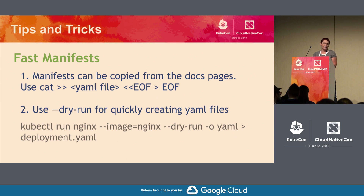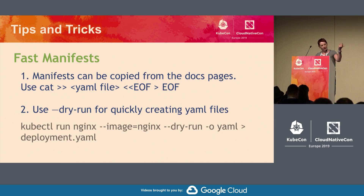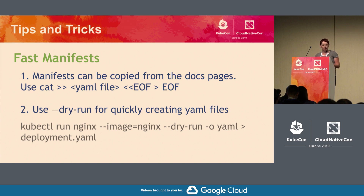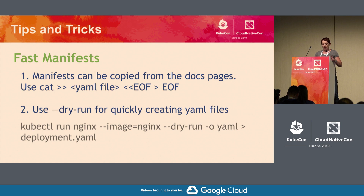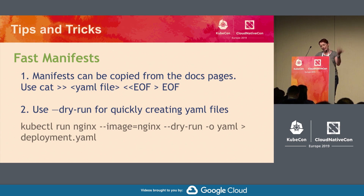Time is of the essence, so you need to create manifests quickly. What worked really well for me was grabbing manifests from the Kubernetes documentation pages, cat-ing them into a YAML file, saving it, and then editing from there. Know your way around the tasks and concepts sections so you can quickly get the YAML example you need. The other approach is using dry-run — stick the dry-run flag at the end of a kubectl command and it will generate a sample manifest that you can then go in and edit.